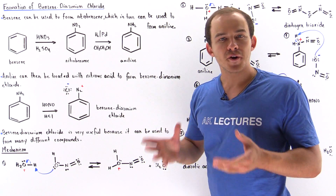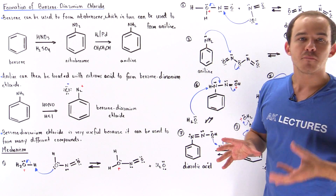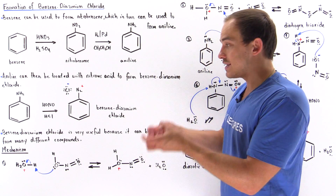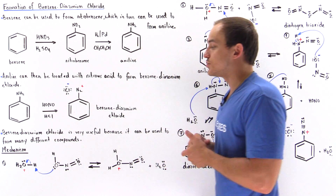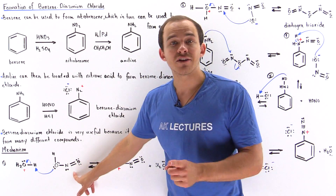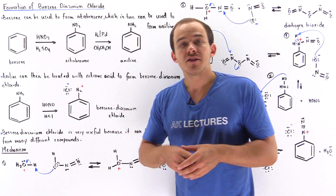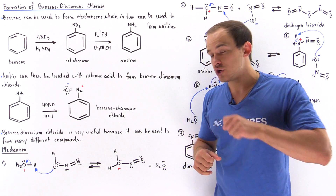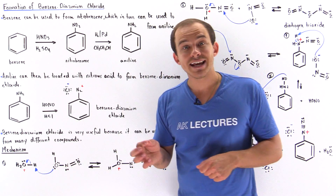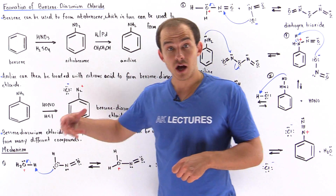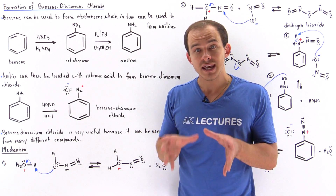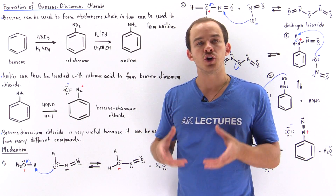In the first step, we take our hydronium molecule, which is present within our hydrochloric acid solution, and this hydronium molecule reacts with our nitrous acid. The lone pair of electrons on the oxygen of the nitrous acid that is attached to our H takes another H atom from the hydronium molecule.